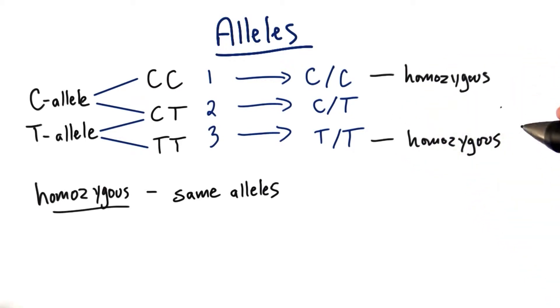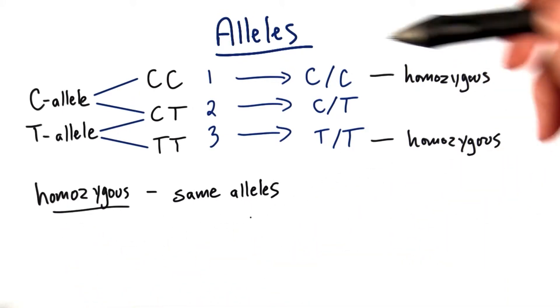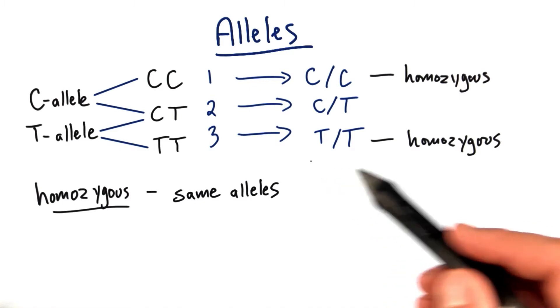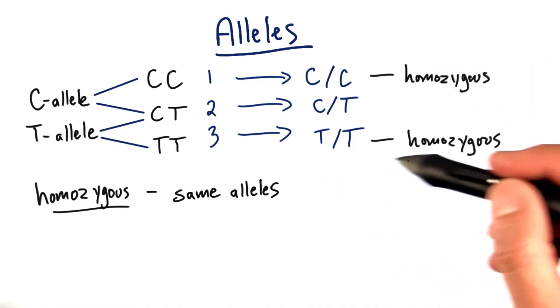We have the homozygous combination, meaning that we have the same alleles in the pair. So in this case, we have two cytosines or two thymines. These would be the homozygous conditions.